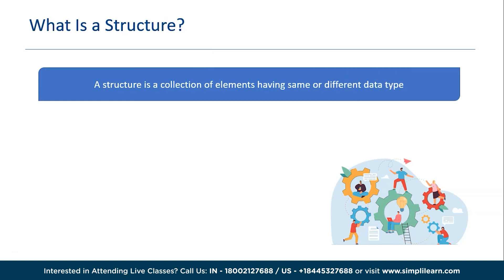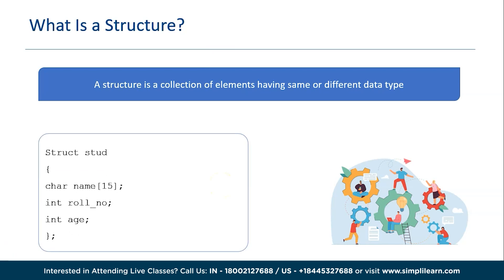So what is a structure? A structure is basically a collection of elements having the same or different data types. In layman's terms, a structure can be defined as a single entity holding variables of different data types that are logically related to each other. All the data members inside a structure are accessible to functions defined outside the structure. Structures in C or C++ are very helpful in cases where we need to store similar data types of multiple entities.